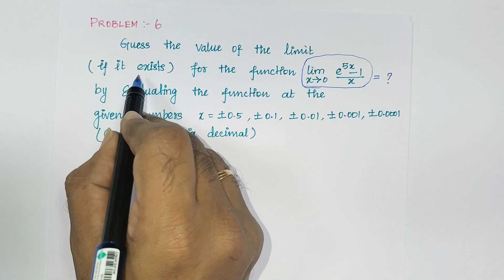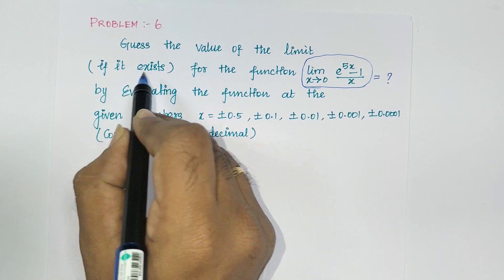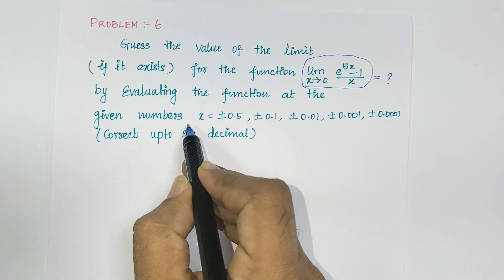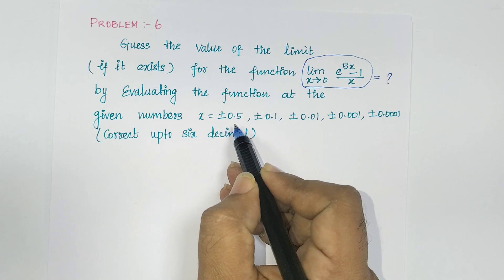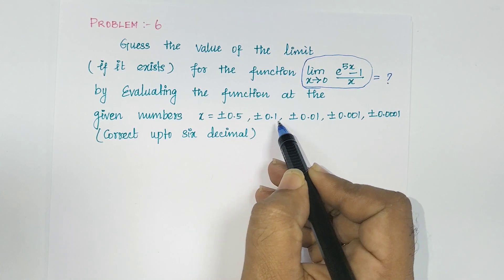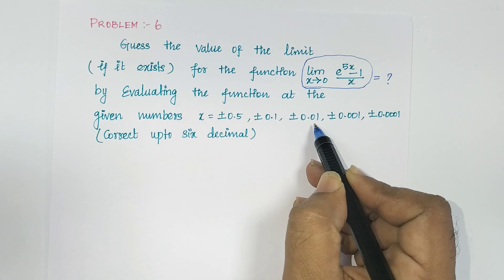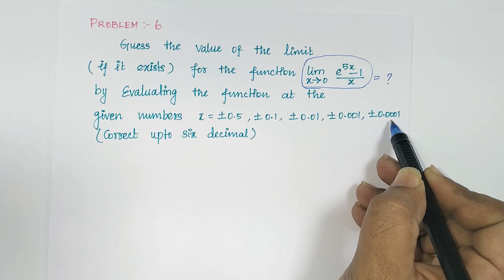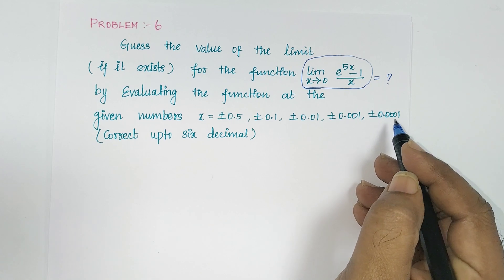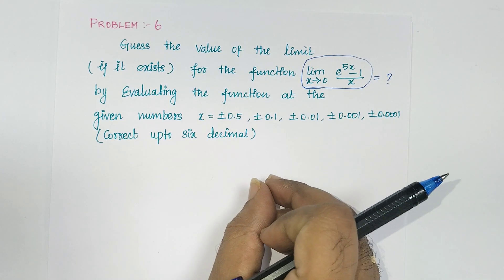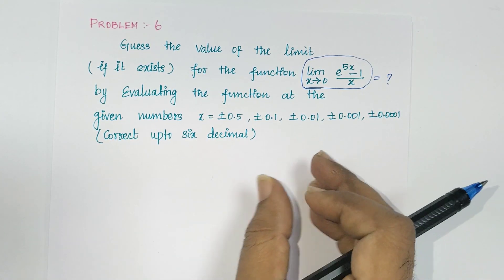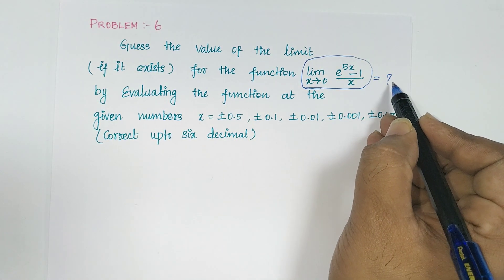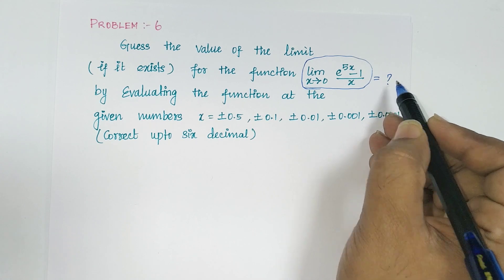Here, we are not going to prove whether the limit exists or not — they already told us it exists. By evaluating the function at the given numbers: x equal to plus or minus 0.5, plus or minus 0.1, plus or minus 0.01, plus or minus 0.001, and plus or minus 0.0001. They have taken points which are closer to 0.